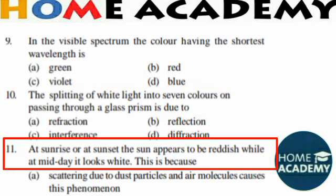Question number 11: At sunrise or sunset, the sun appears reddish, while at midday it looks white. This is due to the scattering of light by dust particles and air molecules. The scattering of light by dust particles and air molecules causes this phenomenon.